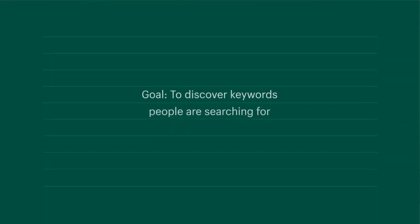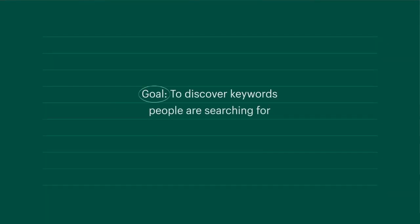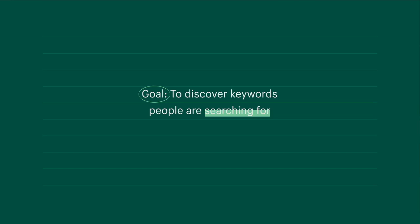Your goal is to discover keywords that people are actually searching for. Solidifying your keyword strategy is the first step before moving on to build your on-site and off-site SEO, which you'll learn about in the next modules. Before we get into how to do e-commerce keyword research, you need to know the three different types of keywords.